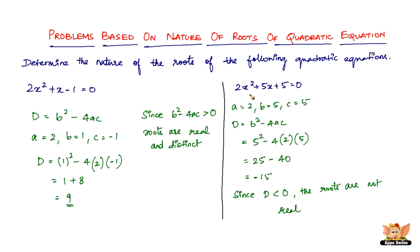This equation 2x squared plus 5x plus 5 has no real roots, since the discriminant b squared minus 4ac is less than 0. Before we end this video, let's quickly solve another problem.